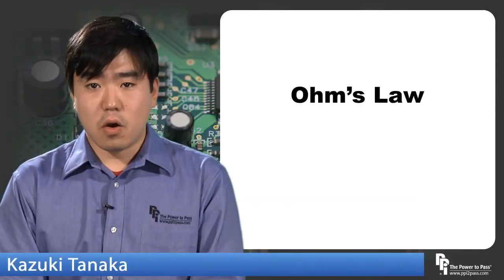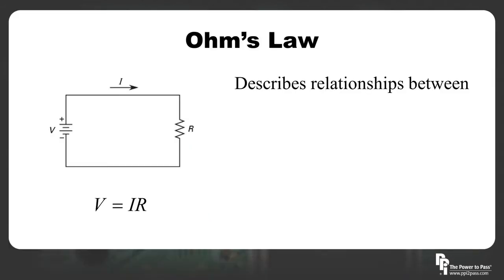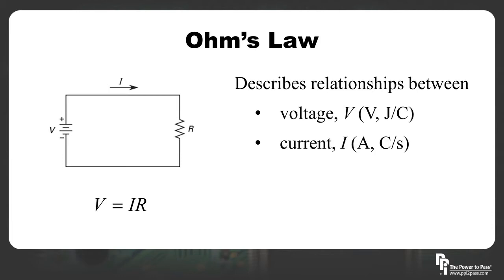Now let's talk about Ohm's law. Ohm's law is the relationship between voltage, current, and resistance. Voltage is the potential difference between two points. Current is the amount of charge that flows through a wire, and R opposes that flow.